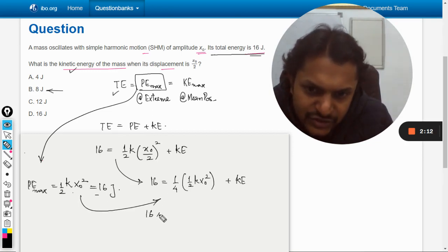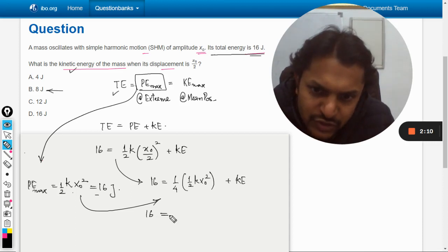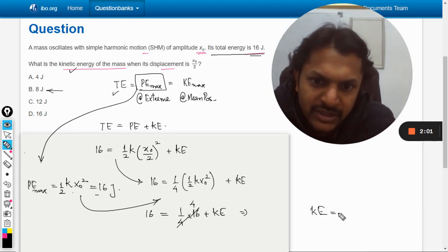And so this energy is given as 16, I can just replace it. So 16 is equal to 1 by 4 into 16 plus kinetic energy. So this will be 4, and from here we find that yes, kinetic energy is coming out to be 12 joules.